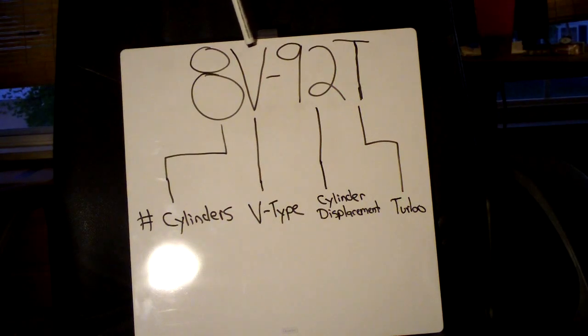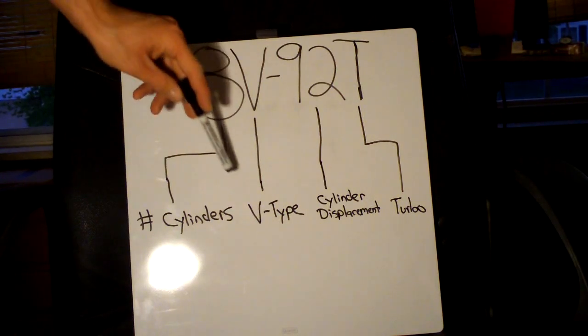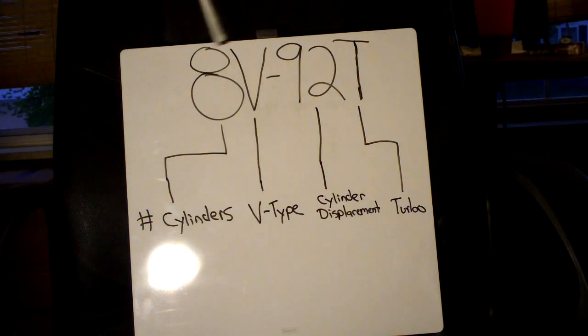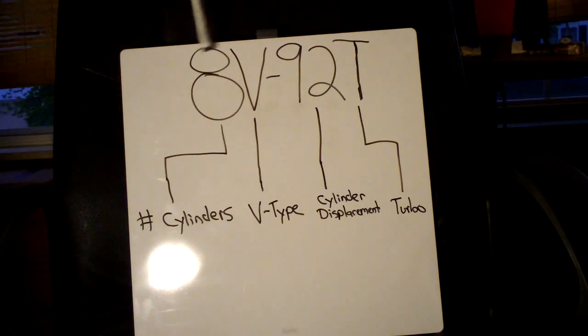The second letter here, V, is going to indicate a V-type engine. In this instance it would be a V8, but if it'd be a 6V or a 12V, it'd be a V12, V8, V6.